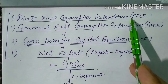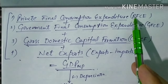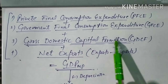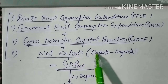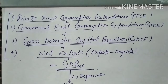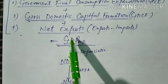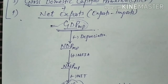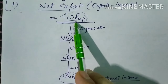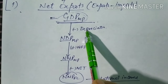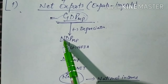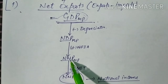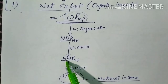To summarize: PFCE (private final consumption expenditure) + GFCE (government final consumption expenditure) + GDCF + net exports = GDPMP. To convert to national income: subtract depreciation to get NDPMP, add NFIA to get NNPMP, then subtract net indirect taxes (NIT) to get NNPFC, which is national income.